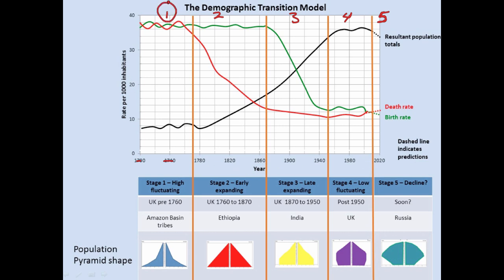In stage one, the country is completely undeveloped or has a very low development level. The red line is the death rate, the green line is the birth rate, and below is the total population. In a stage one country, the death rate is very high — there isn't really health care, life is dangerous, people get sick and die, life expectancy is short. To counteract this, the birth rate is also high because culturally people realize they need to have a lot of babies since some may die. Birth rate and death rate cancel each other out.